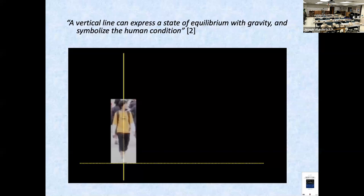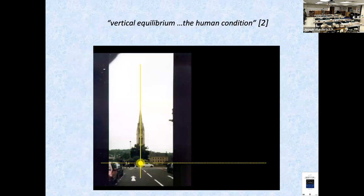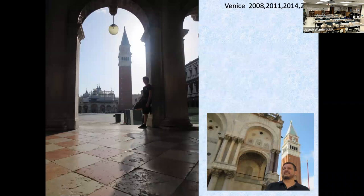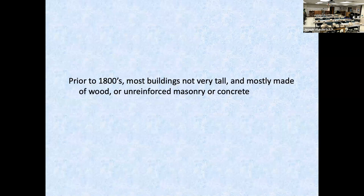The vertical line in architecture theory can express a state of equilibrium with gravity and symbolize the human condition. This trip was one of the two times my son was with me — you can see this picture on the left. Prior to the 1800s, most buildings were not very tall and mostly made of wood or unreinforced masonry or concrete.